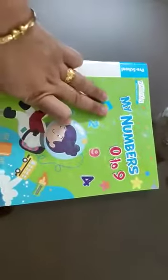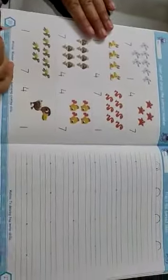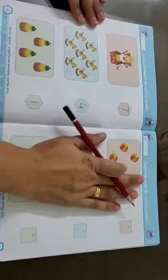Good morning everyone, so this is my math book, my number 0 to 9. Today's homework is at page number 20 and page number 21. We have already done count and match the correct number, count and write the correct number.